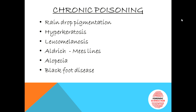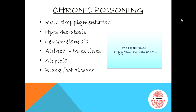Third is leukomelanosis, where macular areas of depigmentation may appear on hyperpigmented skin areas — there is excess melanin deposited on the body. Fourth are Aldrich-Mees lines, which are opaque white bands formed on the nails of the fingers and toes — this is very important. Fifth is alopecia, where hair follicles are affected. Sixth is blackfoot disease, a peripheral vascular disease characterized by systemic arteriosclerosis. The post-mortem finding in chronic poisoning is a fatty yellow liver.